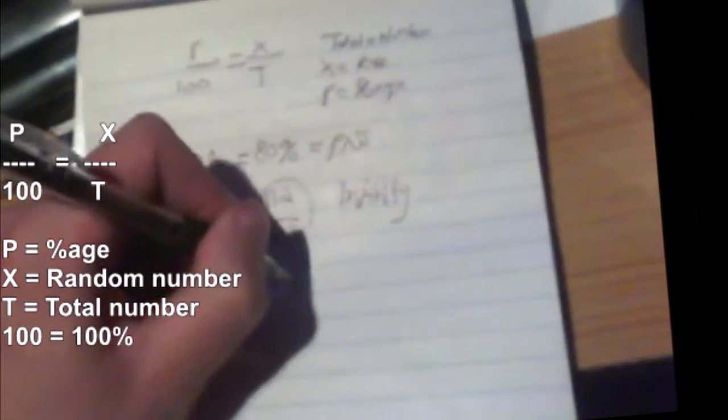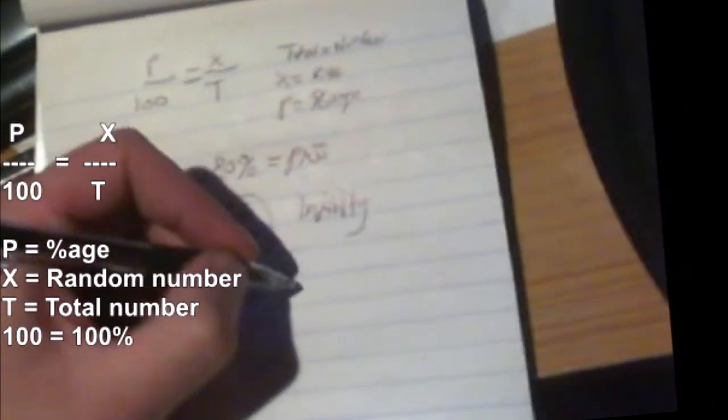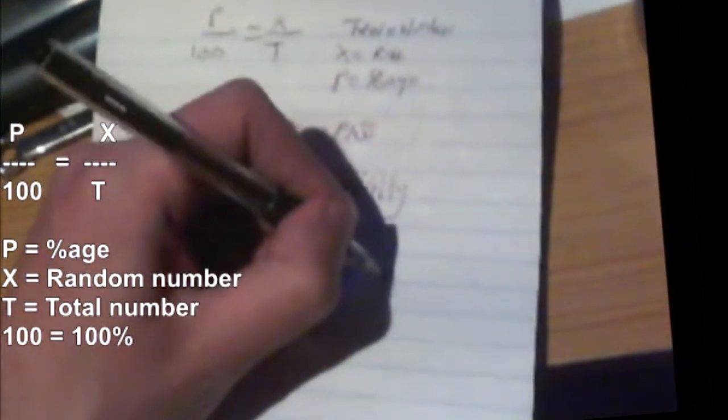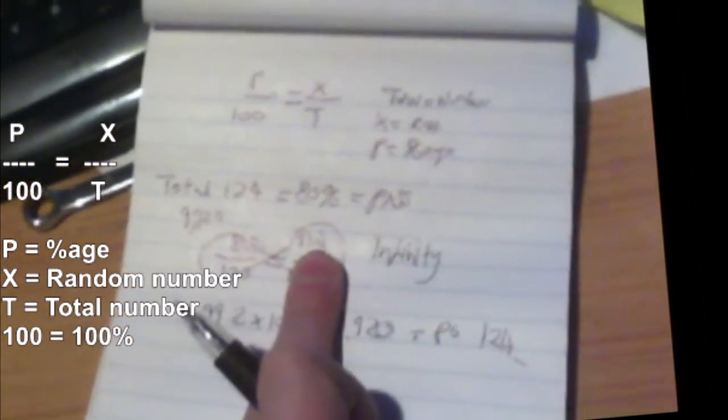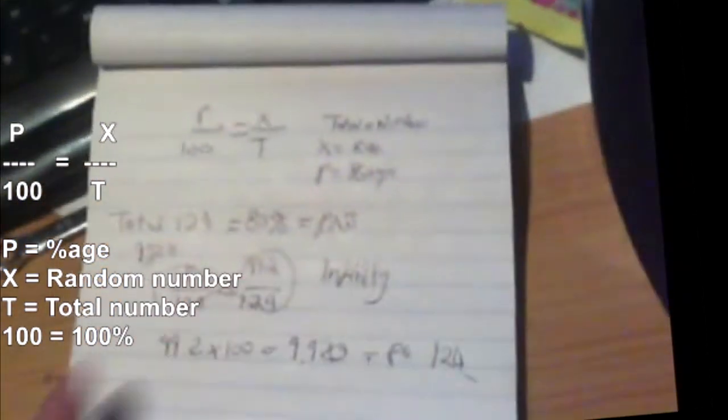To confirm this, we can do 99.2 times 100. What do you think it's going to equal? Well, we just did it the opposite way, so it's going to be 9,920. Divide that by 80, gives you 124. So that tells me I'm going to need probably 99 questions correctly, or to be safe, because it's point 2, I'd go 100 questions correctly. Then I know I passed.